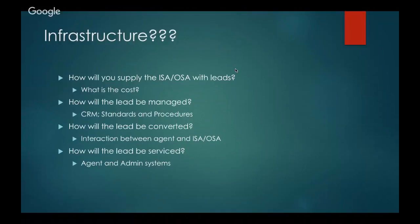First, let's talk about infrastructure. How will you supply the ISA or OSA with leads, and what is the cost? How will the lead be managed — what do your CRM standards and procedures look like? How will the lead be converted, and what's the interaction going to be like between the agent and the ISA or OSA? And ultimately, how will the lead be serviced through agent and admin systems?